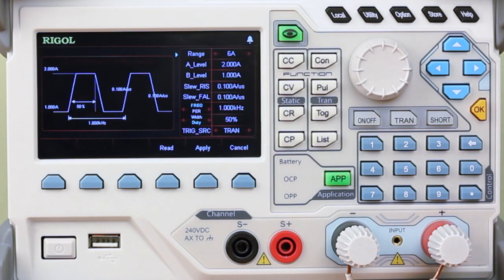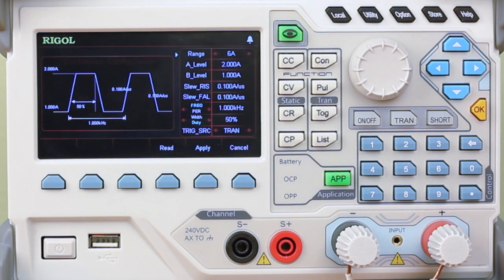Here in continuous mode, we set two current levels, a high level and a low level, as well as slew rates and frequency.